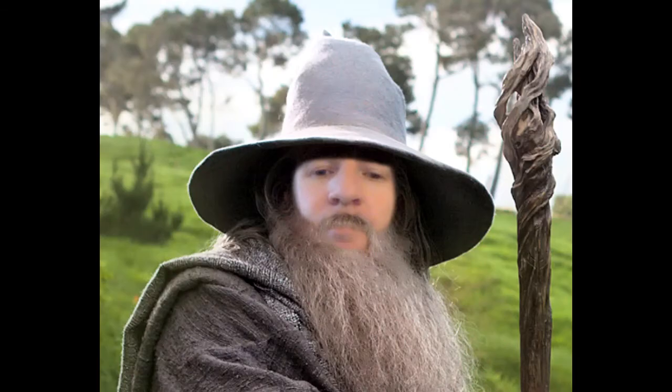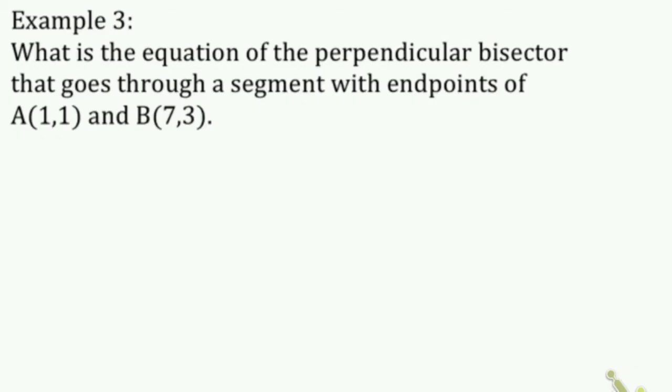So let's take a look at an example problem. What is the equation of the perpendicular bisector that goes through a segment with endpoints of A(1,1) and B(7,3)?